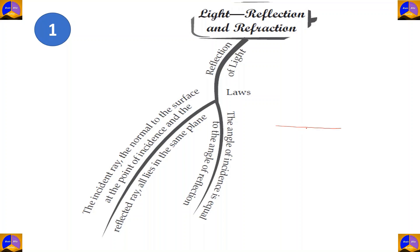Suppose we have a plane here and a perpendicular line called the normal, and a light ray is incident on it, and there is another ray which is reflected off the surface. The rule states that this incident ray, the normal, and the reflected ray all lie in one single plane. The second law states that the angle of incidence is equal to the angle of reflection. Both these laws apply in any form of reflection, whether regular or irregular.